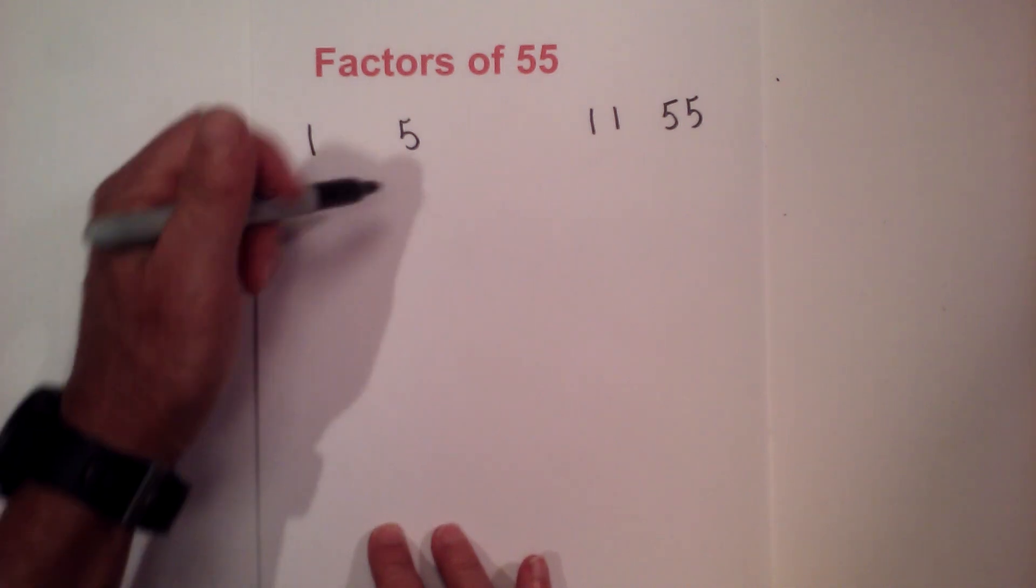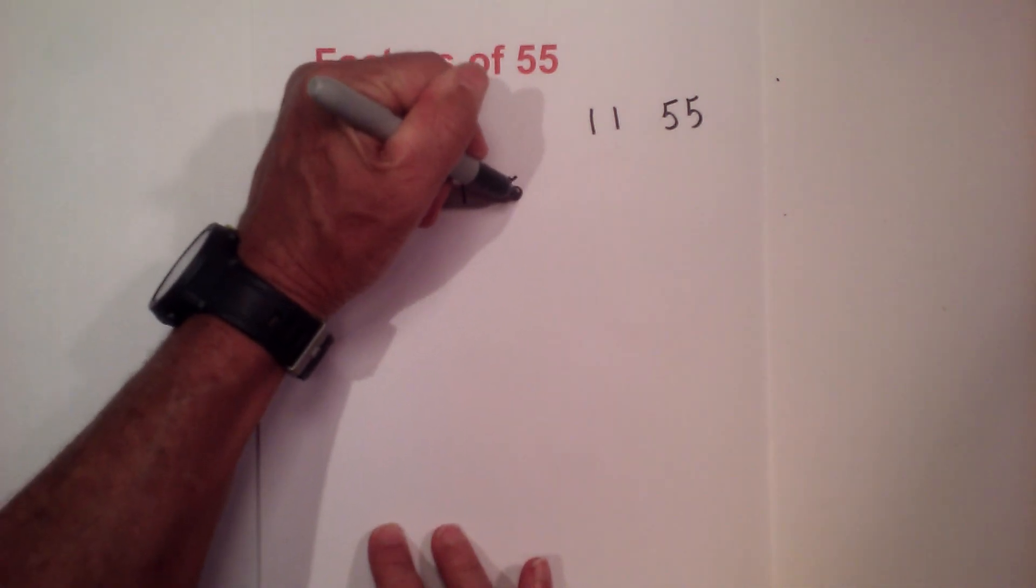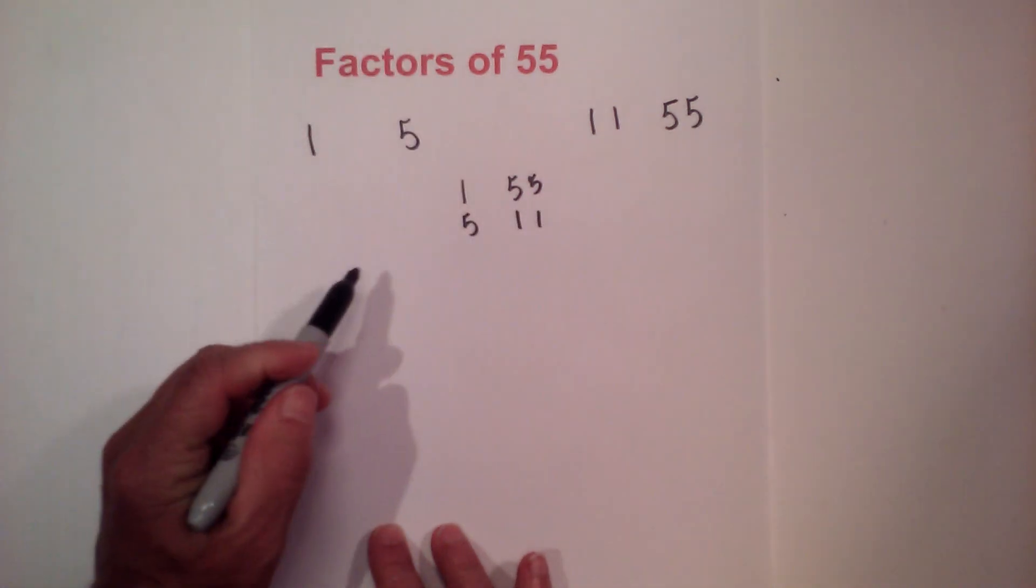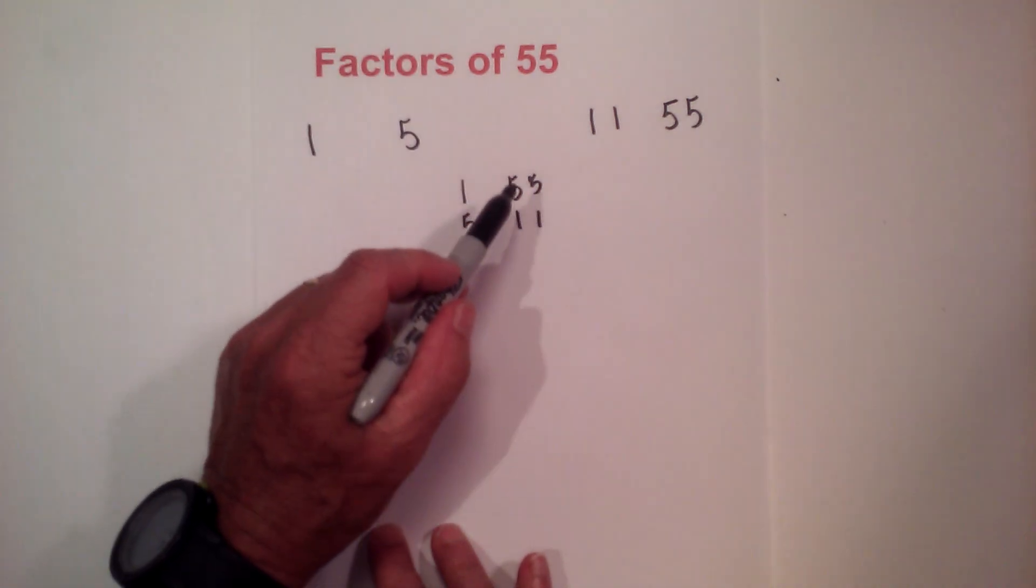So the factors of 55 are 1 times 55 and 5 times 11. So they're 1, 5, 11, and 55.